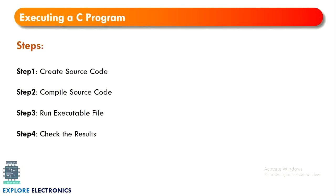We all know that languages like C, C++, and Java are all English-like natural languages. When I say natural language, it is easy for us to understand. So these are called high level languages, but the computer cannot understand these high level languages. What the computer can understand is only machine code, that is binary digits — either 0 or 1.